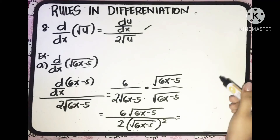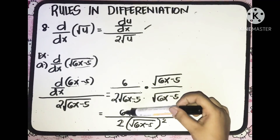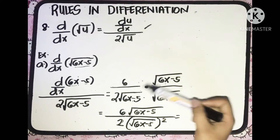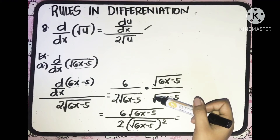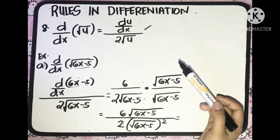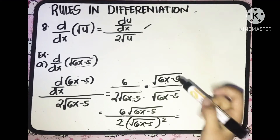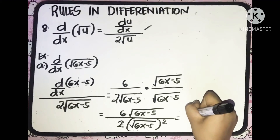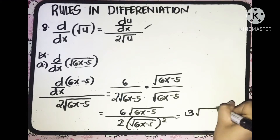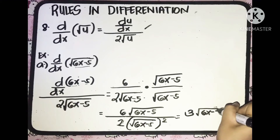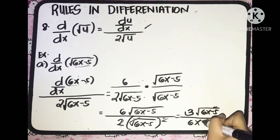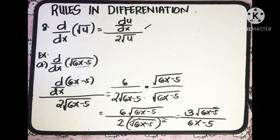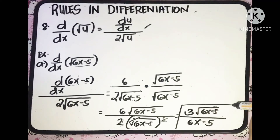We can now eliminate the square root. We have the constants 6 and 2, and since the operation is multiplication, we can simplify 6 over 2, which equals 3. So we'll have 3 square root of (6x minus 5). And in the denominator, the radical sign cancels, leaving just (6x minus 5). So that is the derivative of the given function.